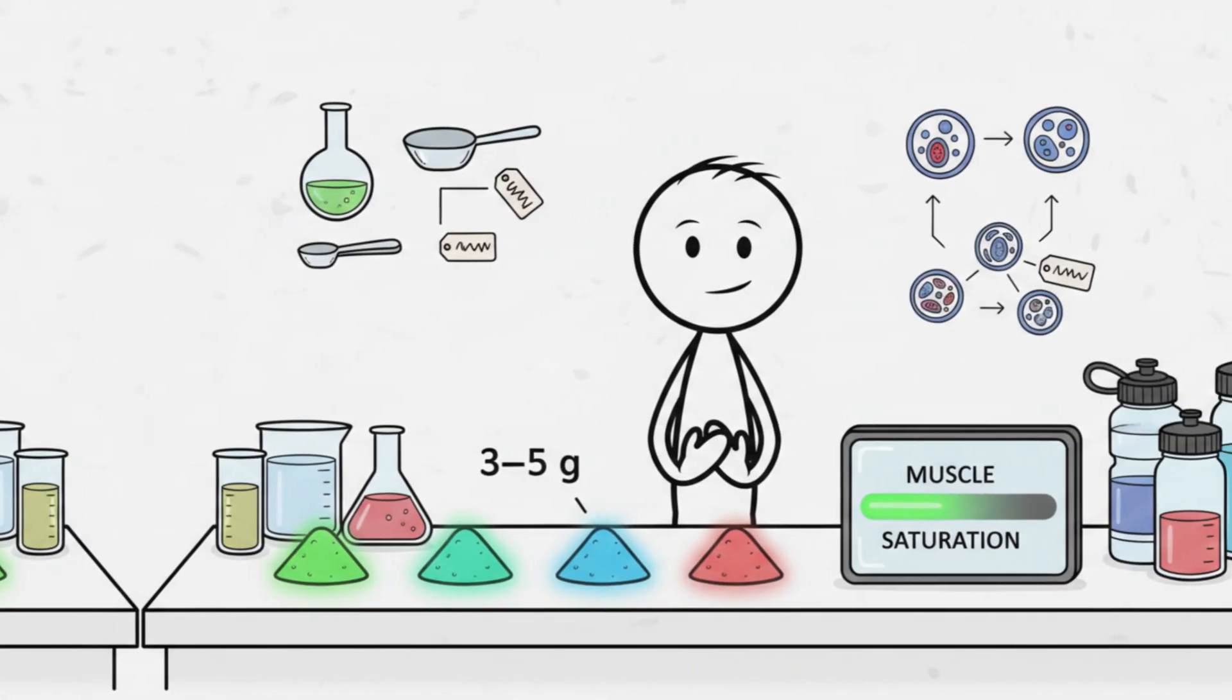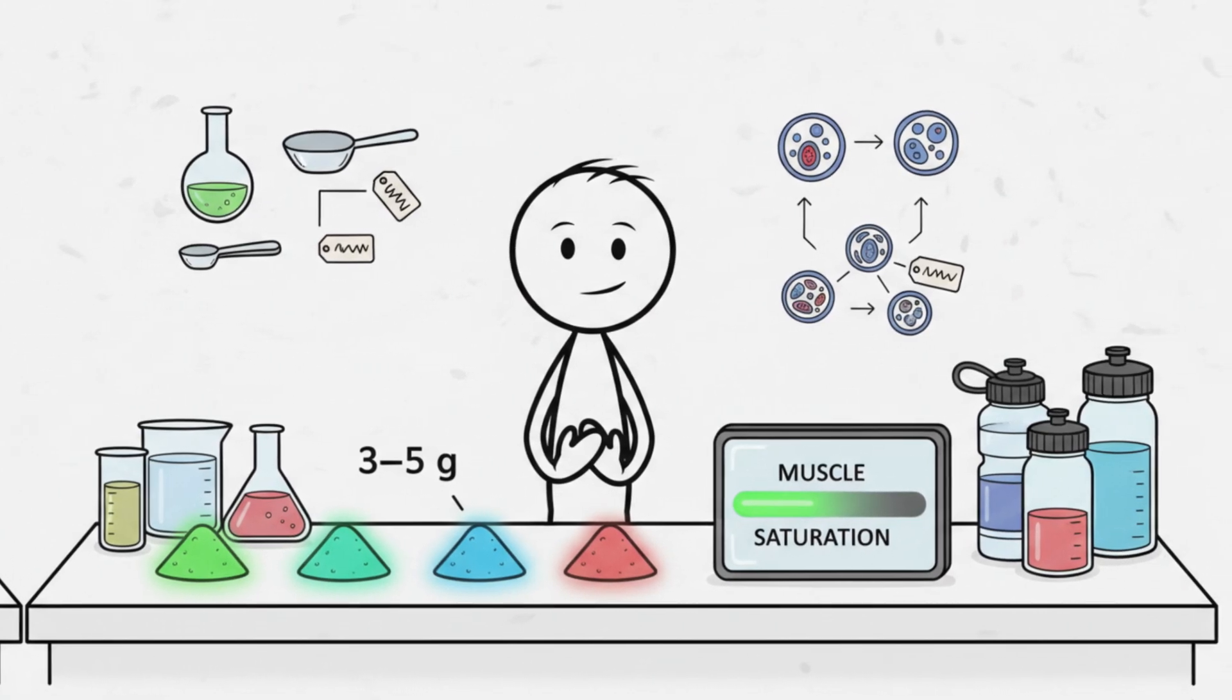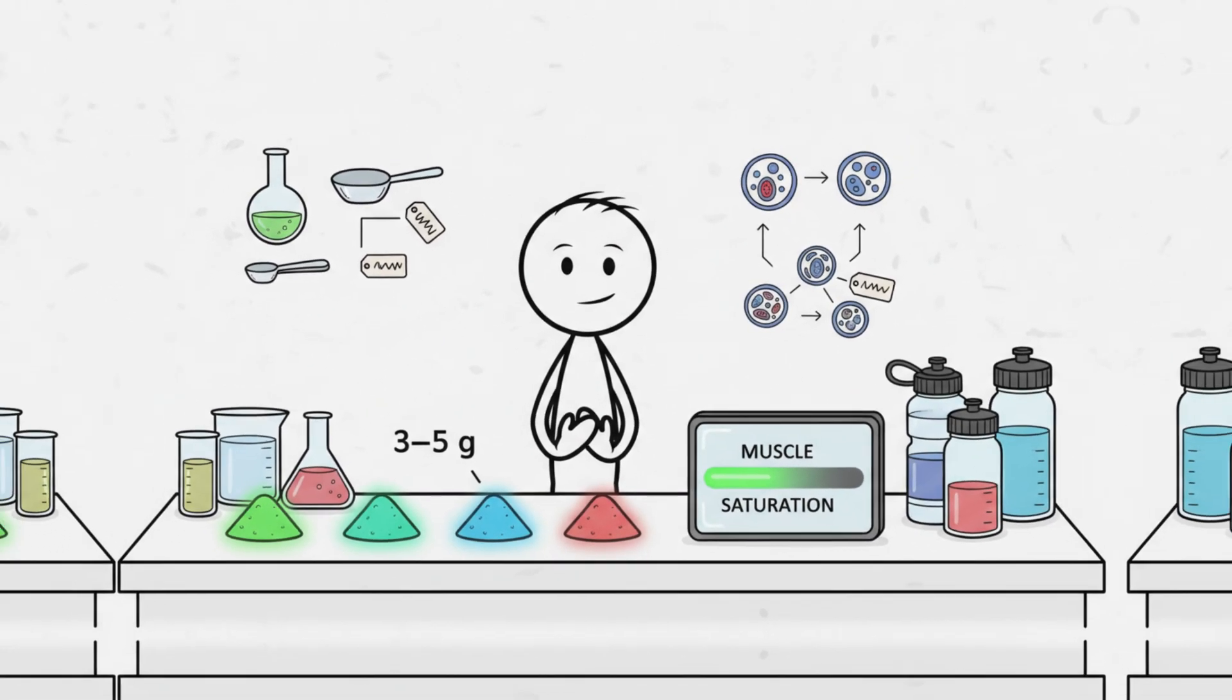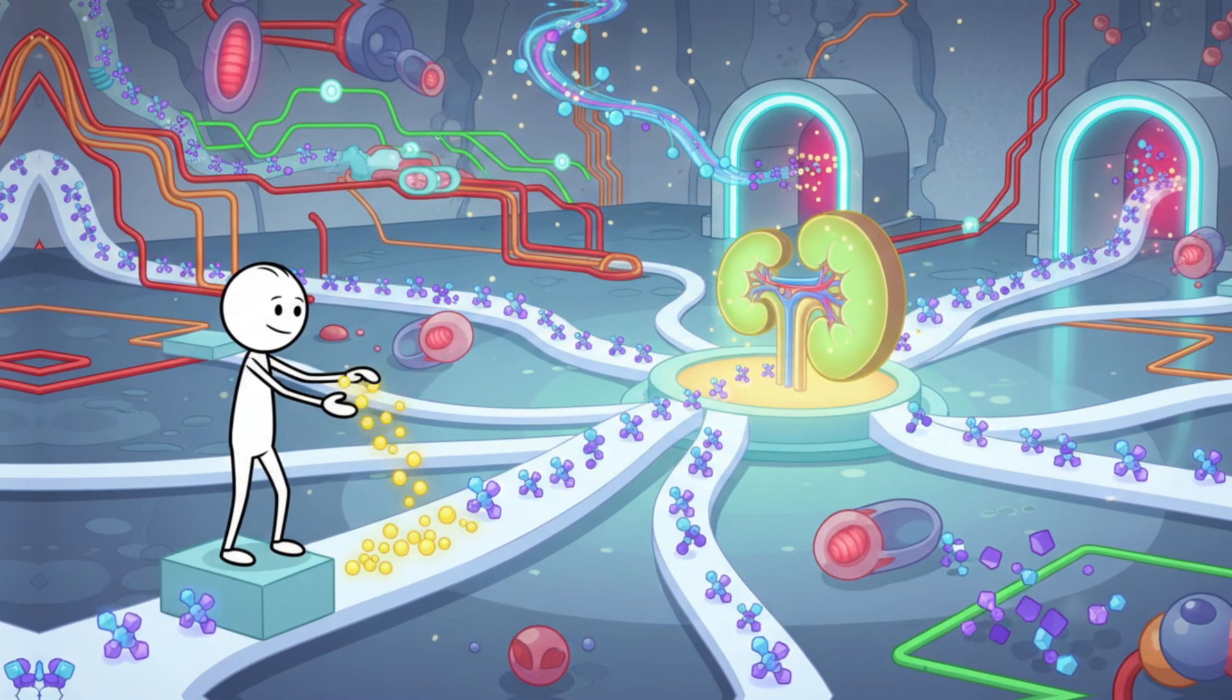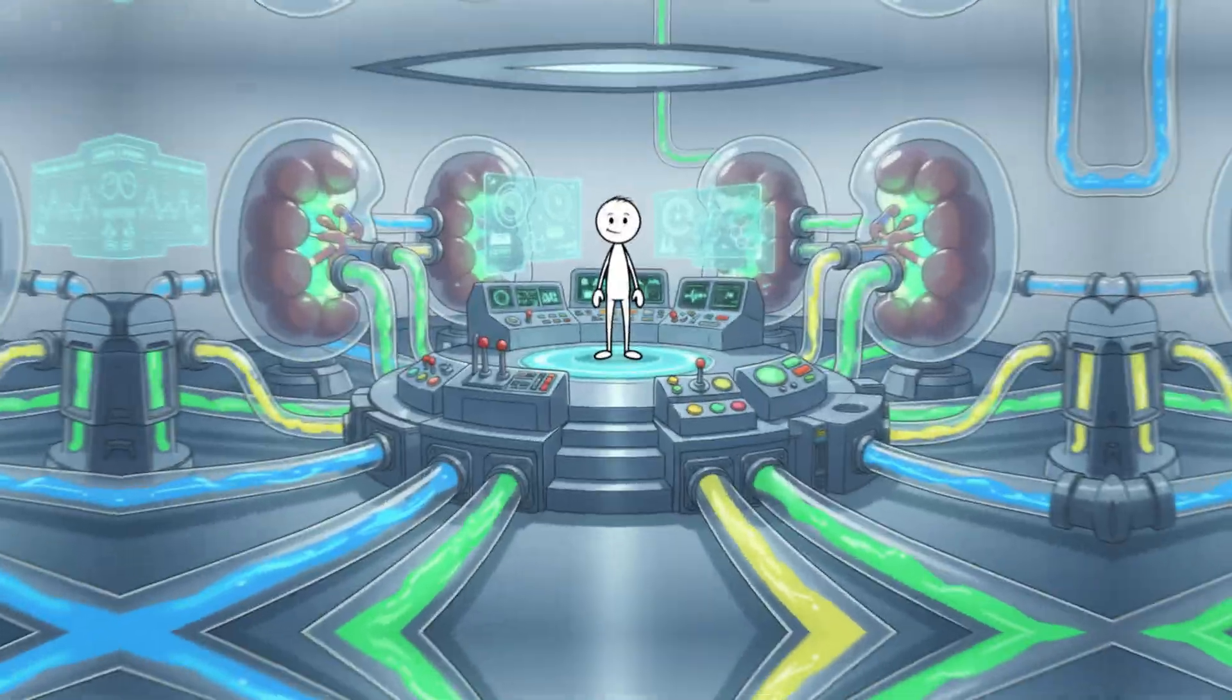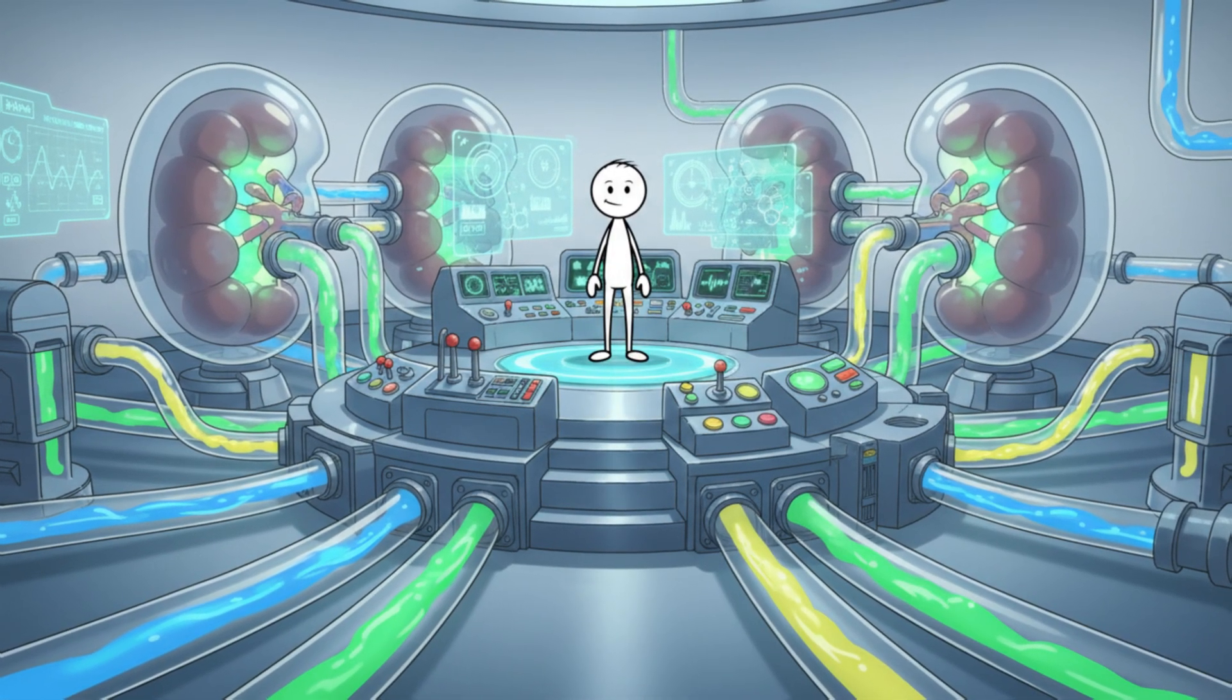This dose maintains full muscle saturation without creating unnecessary metabolic waste. Your body already manages around one to two grams of creatine production on its own. When you supplement modestly, your kidneys treat the extra amount as a normal extension of that natural process. They don't work harder, they simply filter what isn't used, just as they always do.